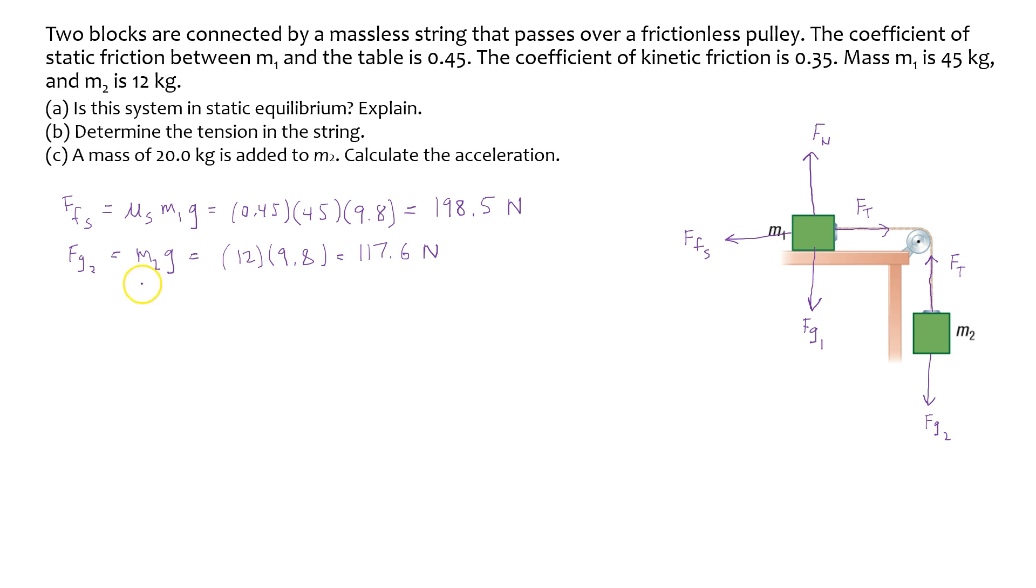So from this we can clearly see that Fg2 is a lot less than the static friction on block 1. So we can conclude that the system will be stationary. So since the static friction is greater than Fg2, the system is in static equilibrium.